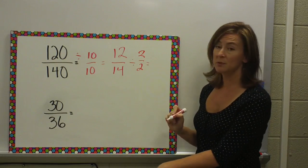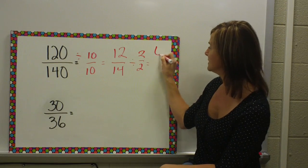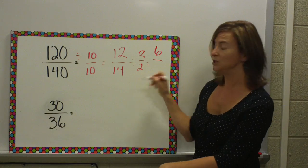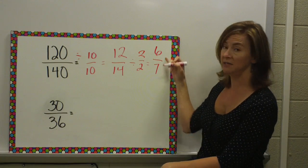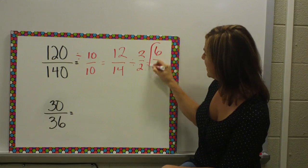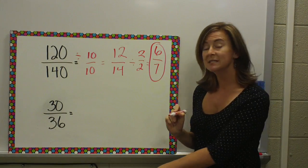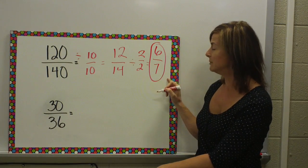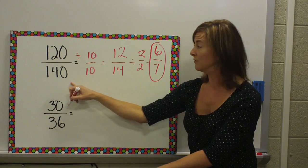So, if I divide both of those by 2, 12 divided by 2 is 6, 14 divided by 2 is 7. I cannot break these down any further because there is no factor that they both share. So, 6 7ths is the simplest form for 120 over 140.